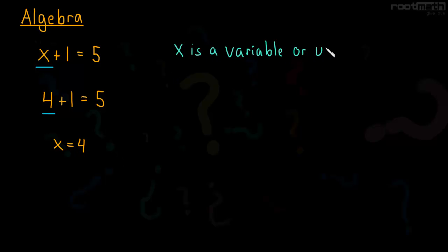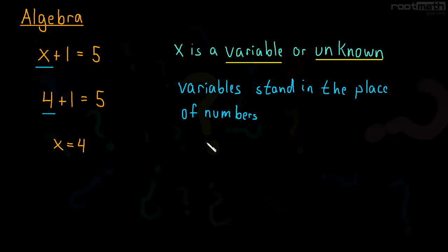So the key idea here is that x is what's called a variable or an unknown. They're synonymous. And what do we need to know about variables? Well, variables just stand in the place of a number. In our example, the letter x, the variable, stood in place of 4.